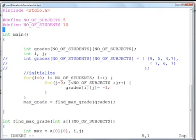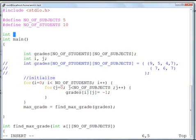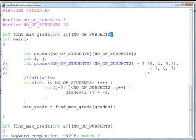Now I have declared the function afterwards, so I will have to give the prototype of the function so that the compiler will not complain about it. find_max_grade, and it's—at least I have to mention int. I can also write something like int a, NO_OF_SUBJECTS, something like this.